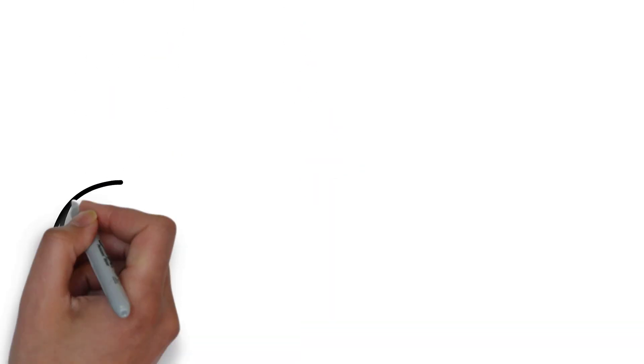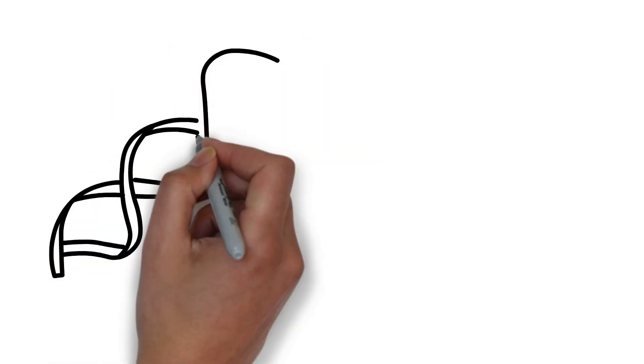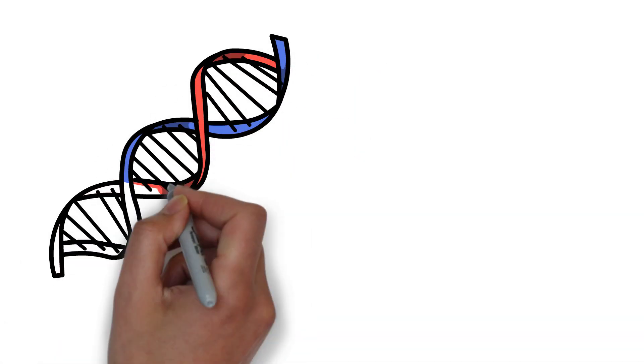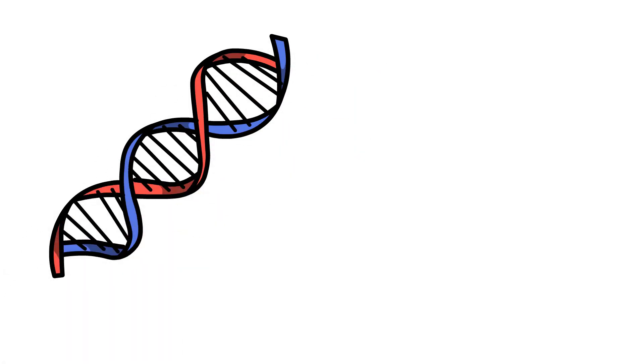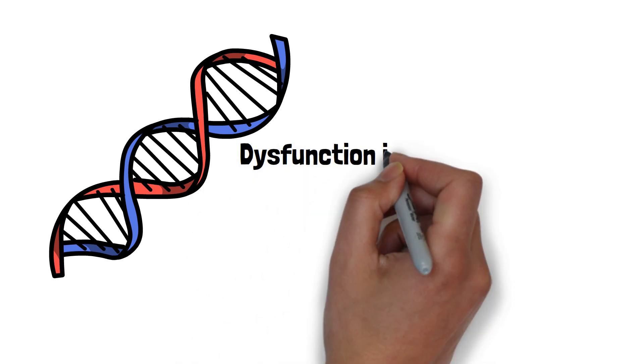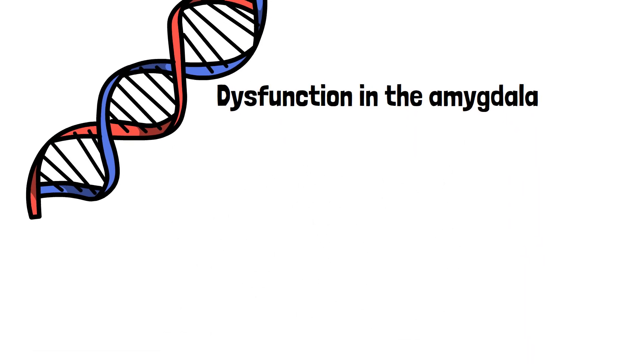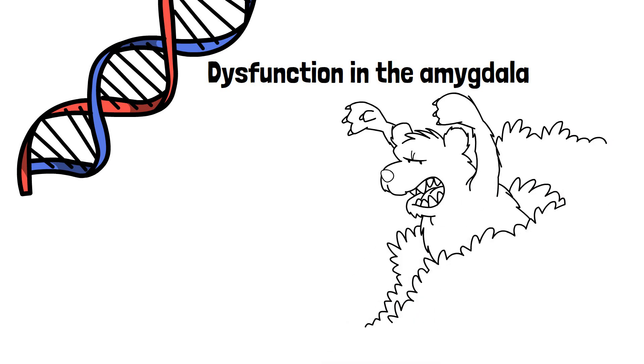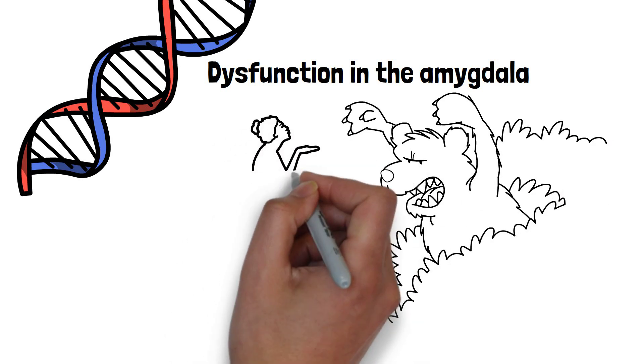Research has suggested that psychopathy has significant genetic risk factors. Neuroimaging data suggests that psychopaths have dysfunction in their amygdala. The amygdala is integral for forming emotional responses to environmental stimuli that could be perceived as danger.